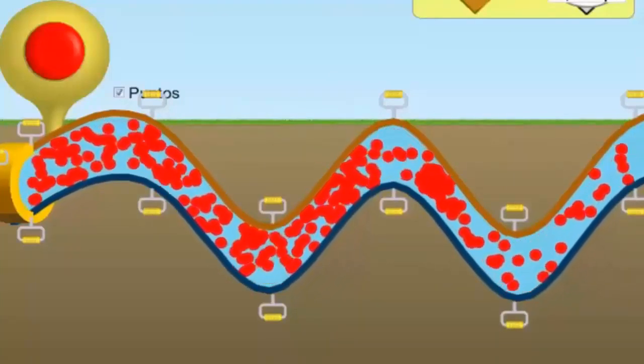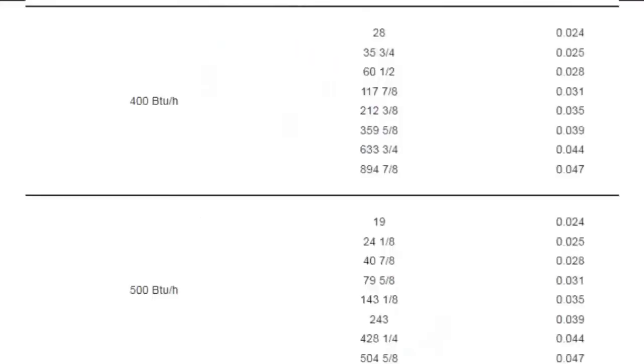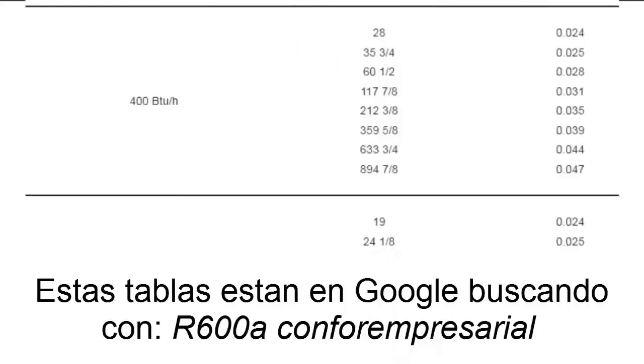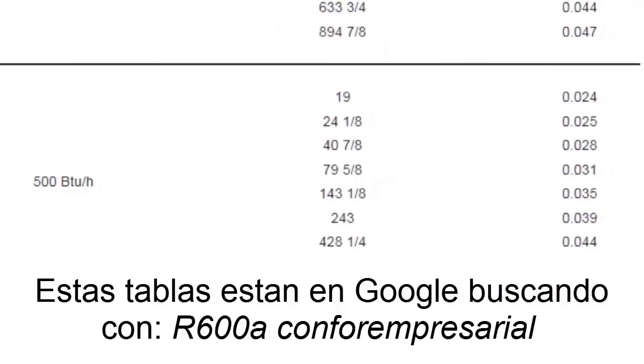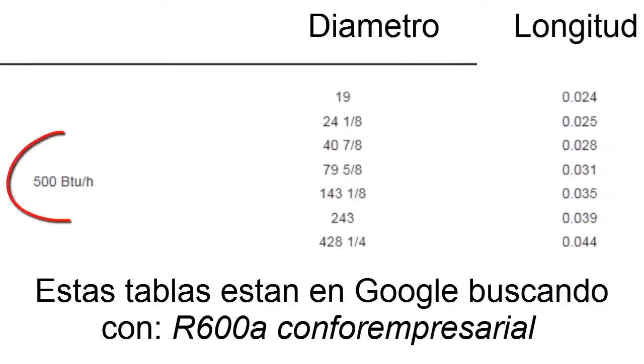On the screen we have a table that allows us to select the diameter and length of the capillary that will work with RSI X100. To make the selection, we must know an approximate cooling capacity of the compressor.